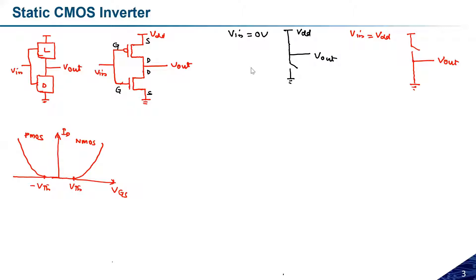We also know the ID-VGS characteristics for both PMOS and NMOS transistors. If VGS is greater than the threshold voltage for the NMOS transistor, the device is in the on state. Similarly, for the PMOS transistor, if VGS is less than the threshold voltage, the PMOS will be in the on state.